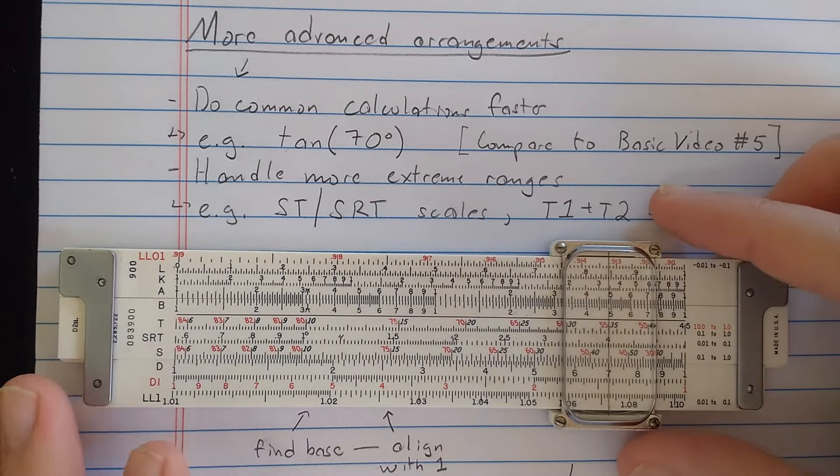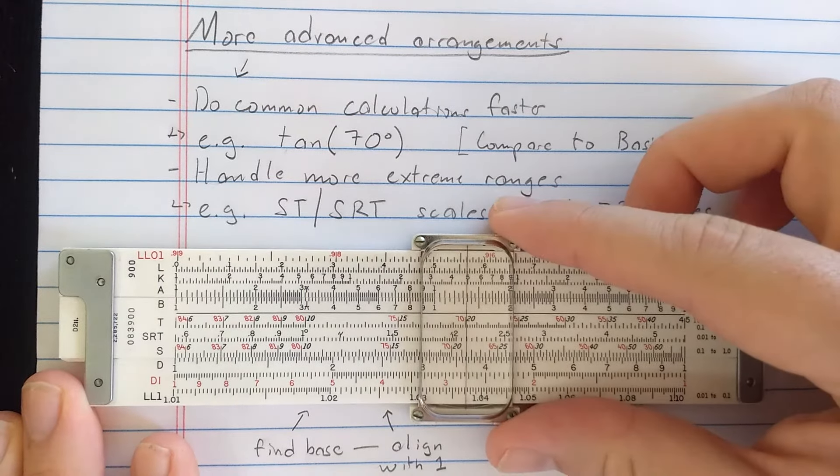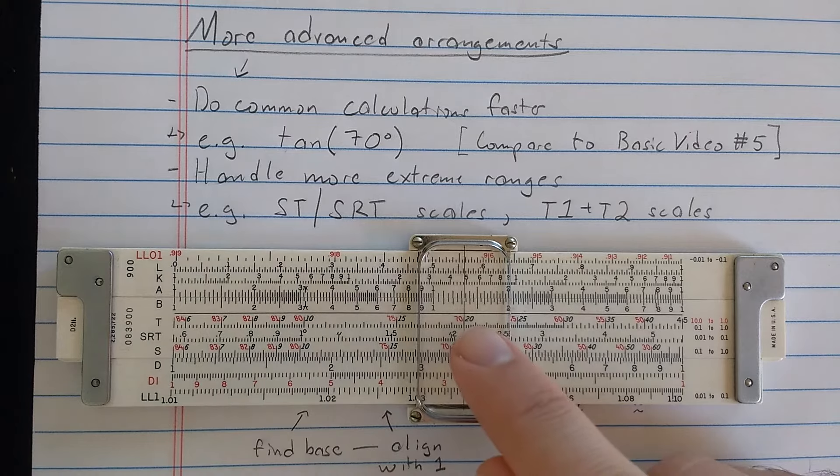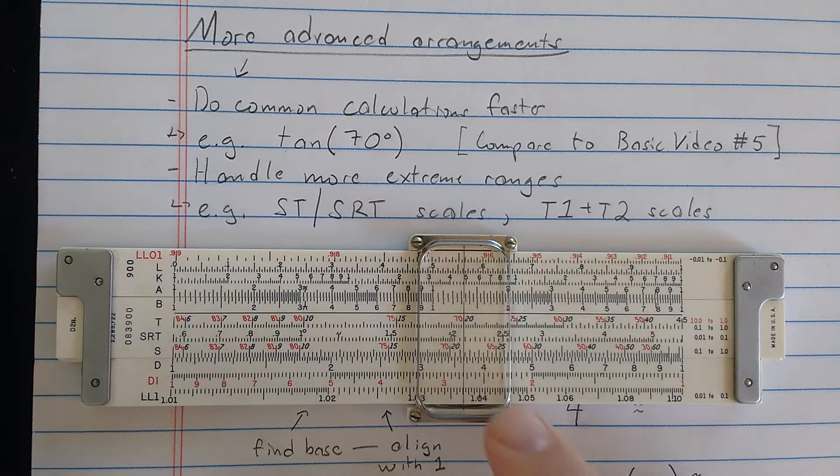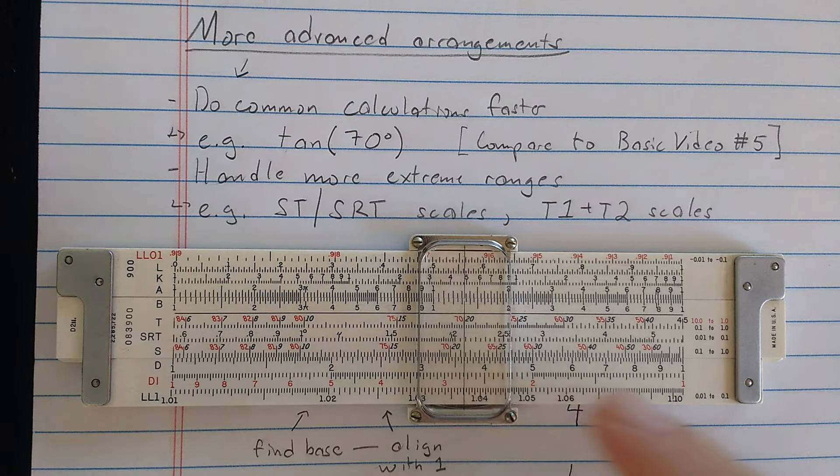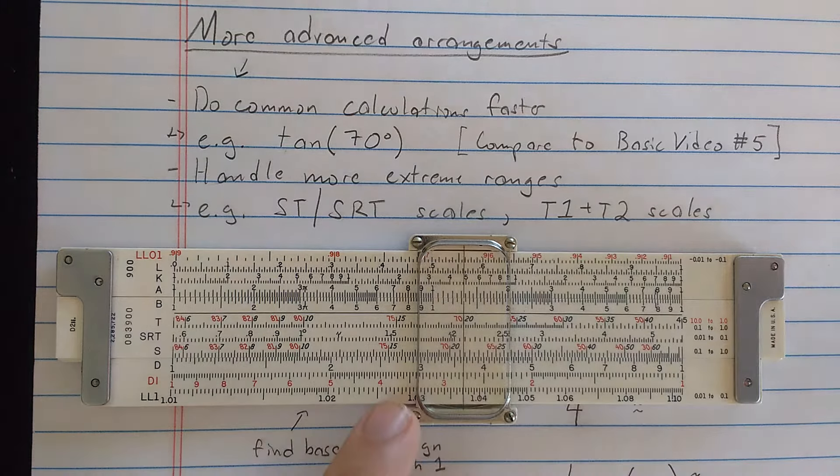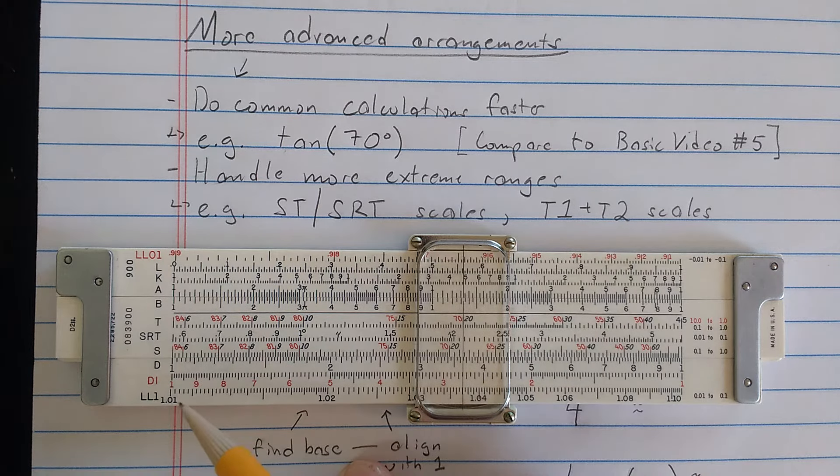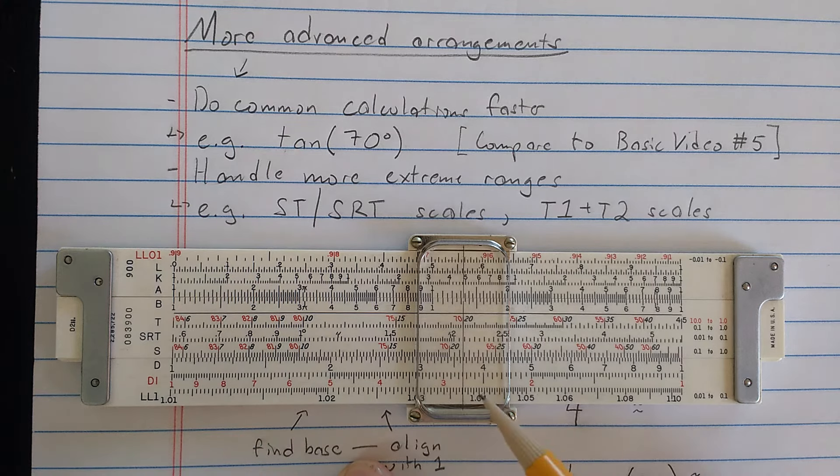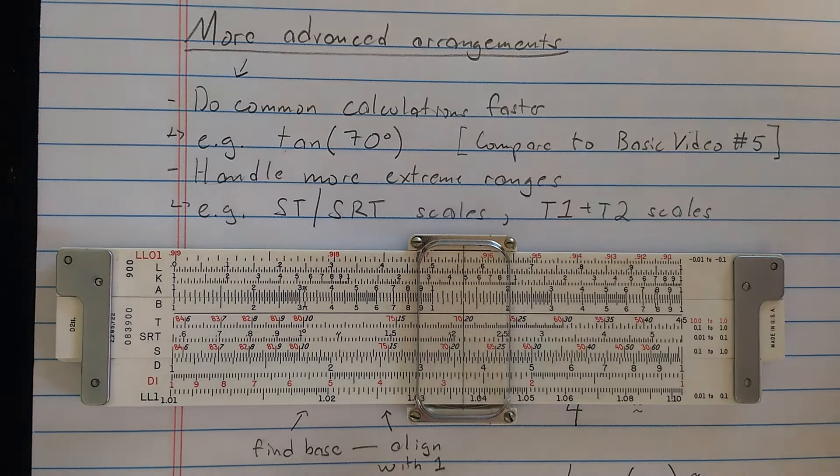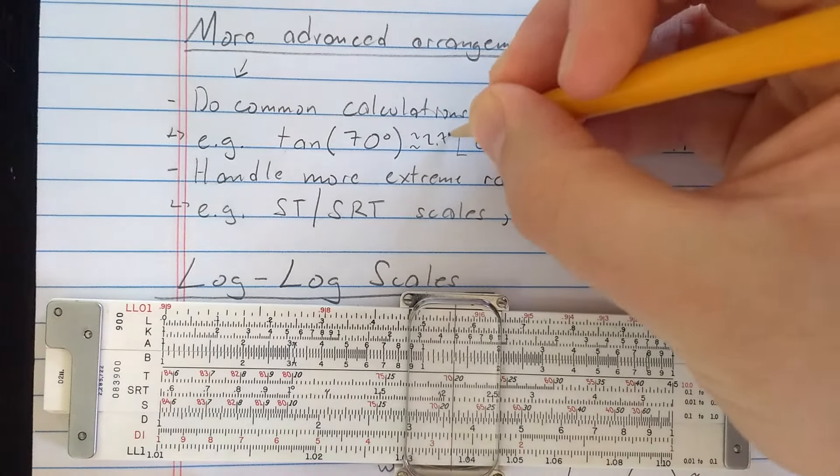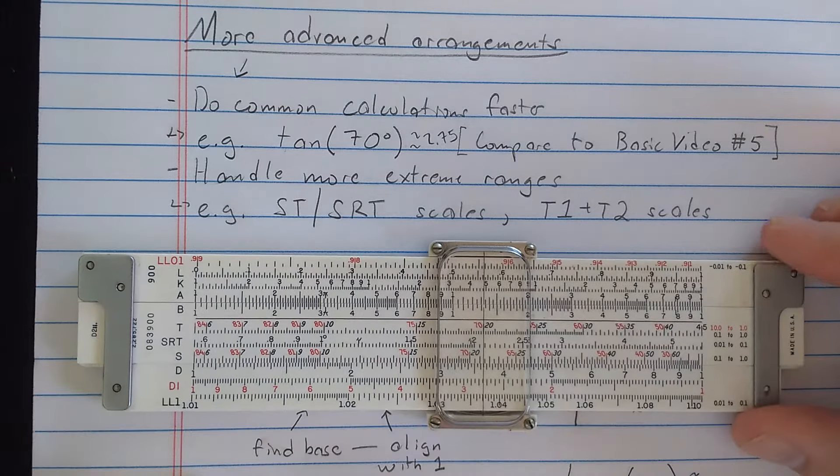First I computed the complement and got 20 degrees, but you can see here if I'm thinking I could just read the 70 in red on the tangent scale. But then we knew we had to compute the reciprocal because we're computing cotangent of 20, but what we wanted to do was take the reciprocal of that and we used the CI scale on the back of the slide of the basic slide rule. But you see here, this slide rule has this arrangement with the DI printed on the base here. So I can read the correct result, which was about 2.75 directly on the DI scale there, without having to do something as complicated as we had to do with the basic slide rule.